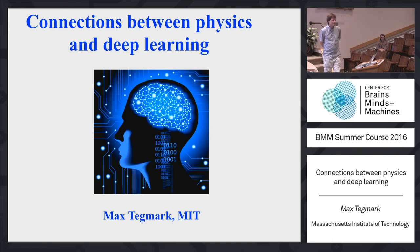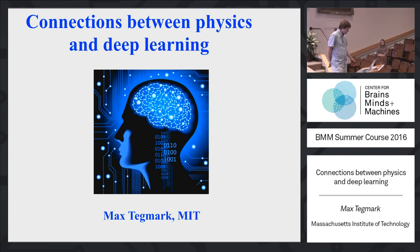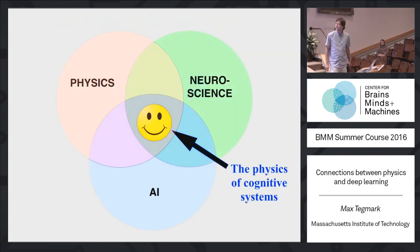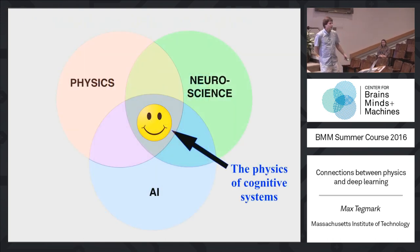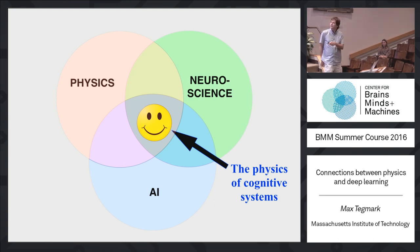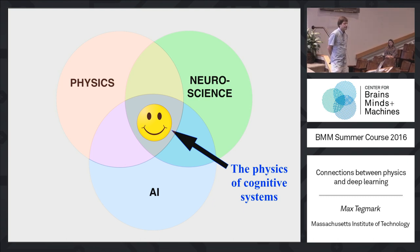So I'm going to talk about the connections between physics and deep learning. I feel that there's a lot of really wonderful science to be done here in the middle of this Venn diagram at the intersection between physics, neuroscience, and AI. I'm going to give two different examples of cool things exactly in that area.